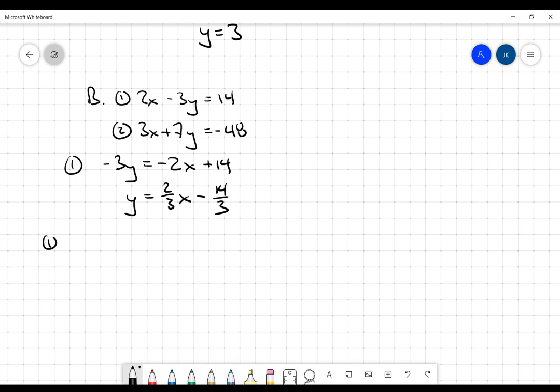Now I can take that from equation one and substitute into equation two. So this will be 3 times x plus 7 multiplied by 2 thirds x minus 14 thirds. And that is going to equal negative 48 because remember, I'm replacing the y with what is equivalent to.